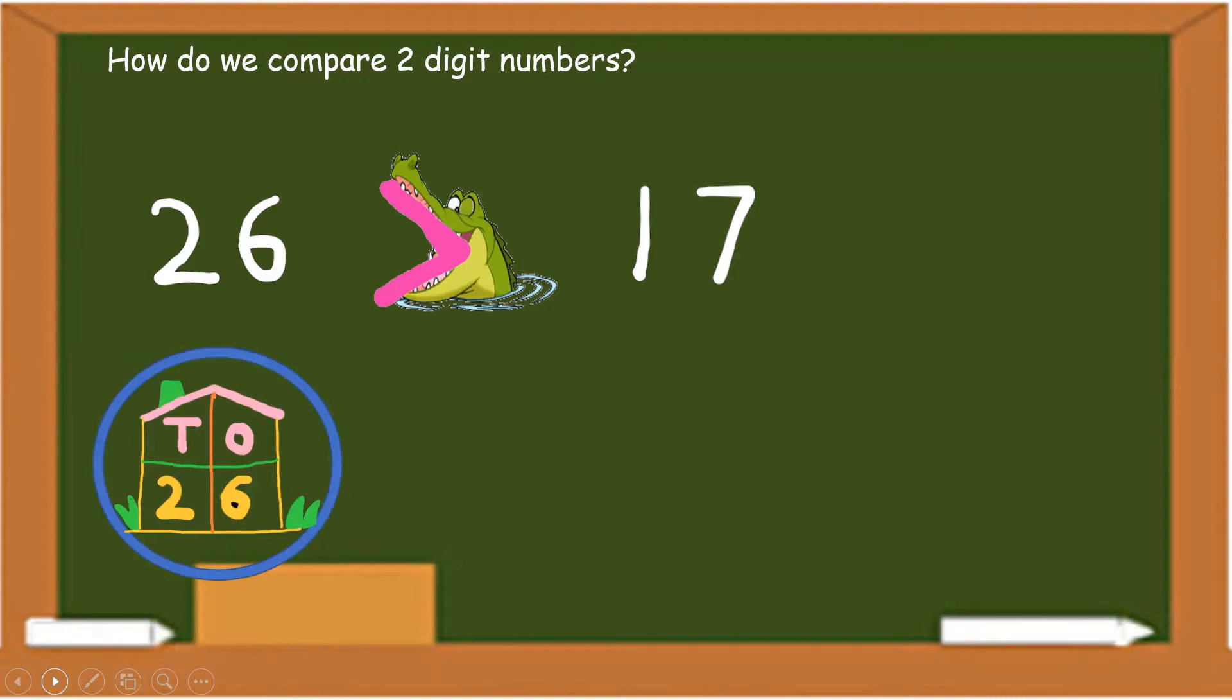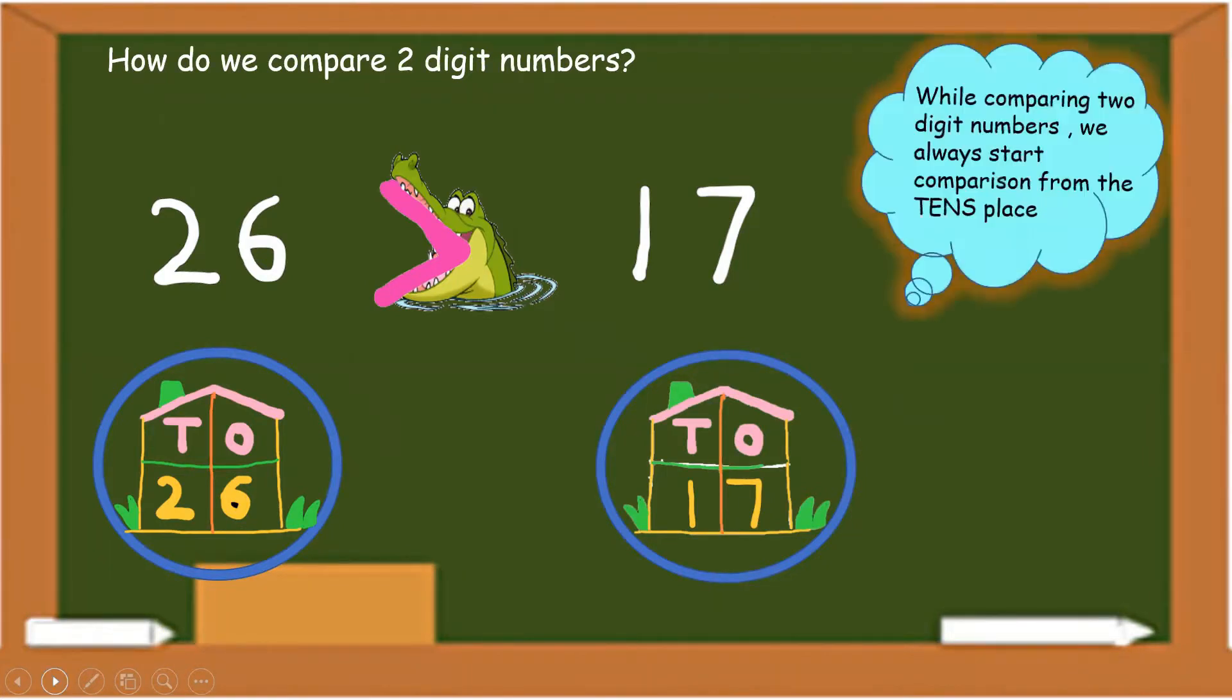26 and 17. 26 is two tens and six ones. Whereas, 17 is one ten and seven ones. So, you always start comparing a two-digit number from the tens place.